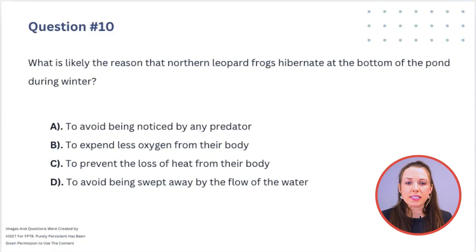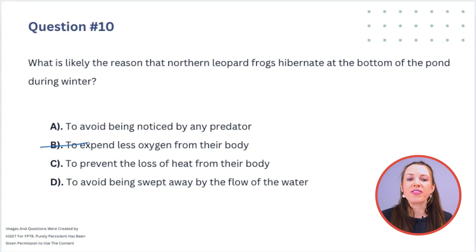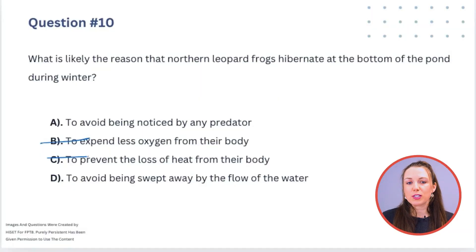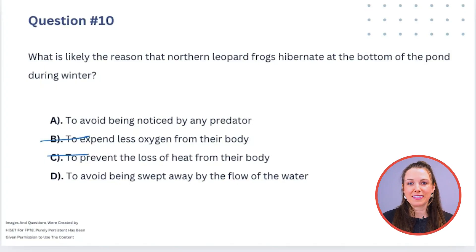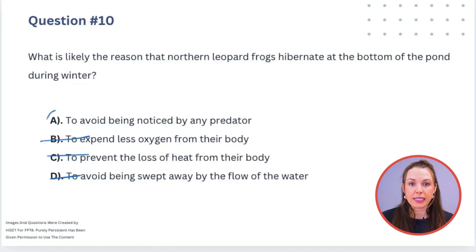Let's look at the other options. B: to expend less oxygen — does that have anything to do with being at the bottom of the pond? No. C: to prevent loss of heat — frogs are cold-blooded amphibians, their body temperature matches the ambient temperature, so they don't lose heat like we do. D: to avoid being swept away by water flow — there is no flow of water; this is an isolated pond. So the answer is A: to avoid being noticed by any predator.